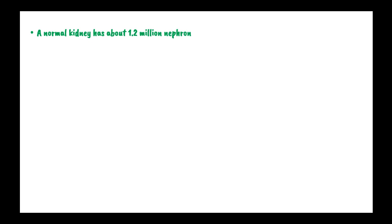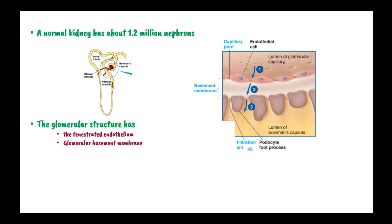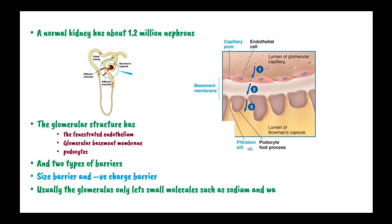The normal kidney has about 1-2 million nephrons. The glomerular structure has the fenestrated endothelium, glomerular basement membrane, and the podocytes. There are two types of barriers in the nephron: the size barrier and the negative charge barrier. Usually the glomerulus only lets small molecules such as sodium and water pass into urine, but does not allow bigger or negatively charged molecules such as proteins to pass through the membrane.